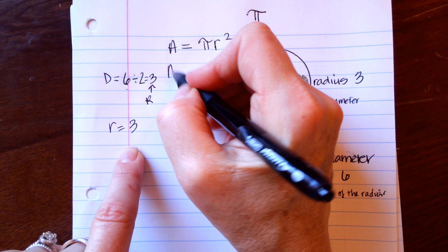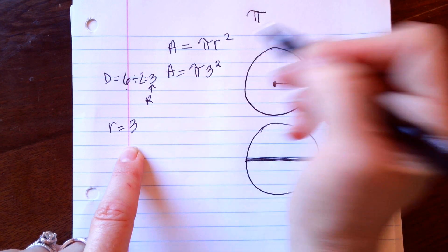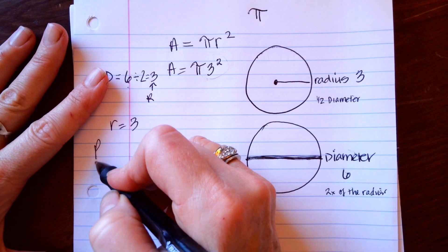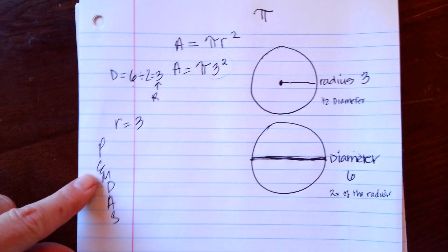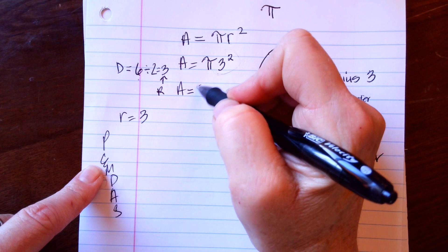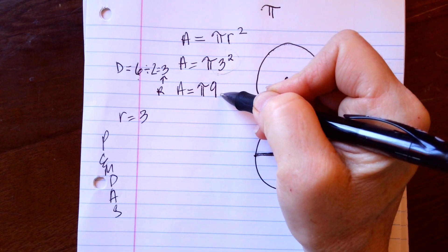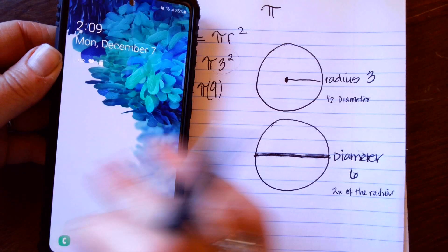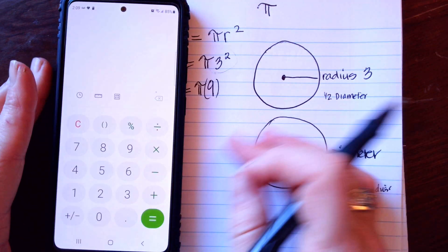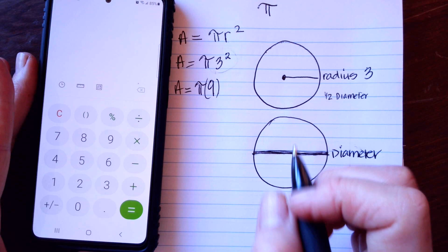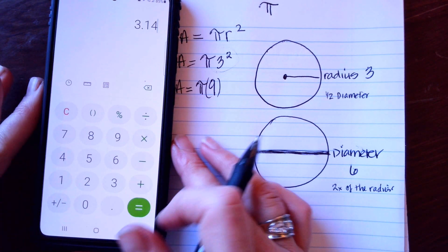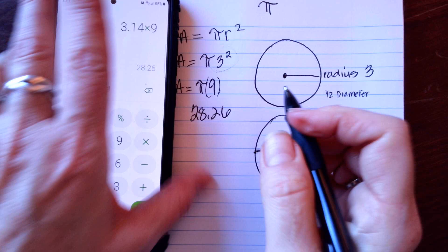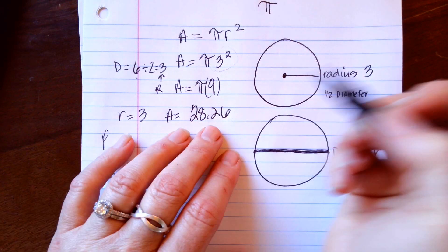Area equals pi r squared. Order of operations tells us we have to do the exponent first — PEMDAS says exponents come first. So we write: A = pi times three squared. Three squared is nine. Then on your calculator — or by hand — you do 3.14 times nine, which equals 28.26. So the area is 28.26.